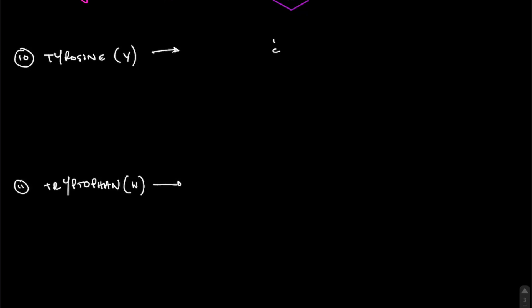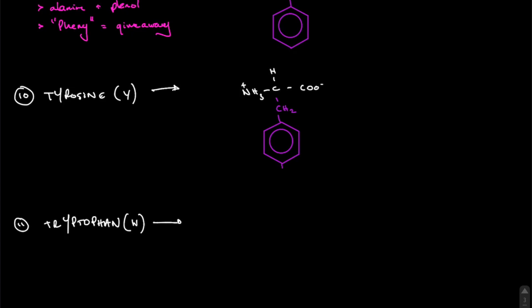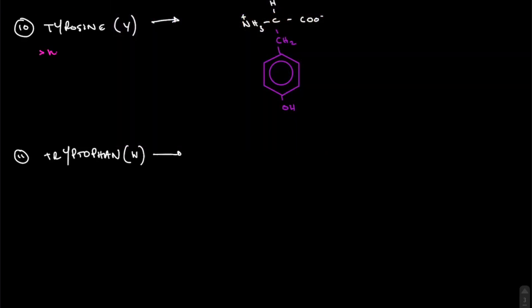The difference between phenylalanine and tyrosine is quite small. You have the same methylene group and then the same ring, except there is an alcohol group added — so tyrosine is a hydroxylated phenylalanine. Nice and simple.